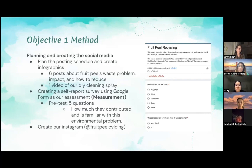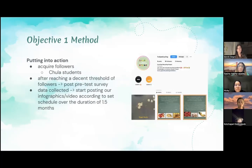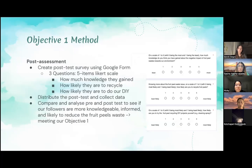We then proceeded to create an Instagram with the handle fruit peel cycling. We then put all our work into action. We acquired our followers, which were targeted as Chulalongkorn University students. After we reached the threshold of followers, we posted our pre-test survey. The data had been collected and we started to post our infographics and videos according to our set schedule over the duration of 1.5 months. Finally, we conducted our post assessment by creating a post-test survey using Google Form, which included three questions in a five-item Likert scale format. These questions assessed three areas: how much knowledge they gained from our Instagram posts, how likely they are to recycle fruit peels, and how likely they are to try out our DIY. We then distributed the post-test, collected the data, and compared and analysed the pre- and post-test to see if our followers were more knowledgeable and more likely to reduce fruit peel waste.